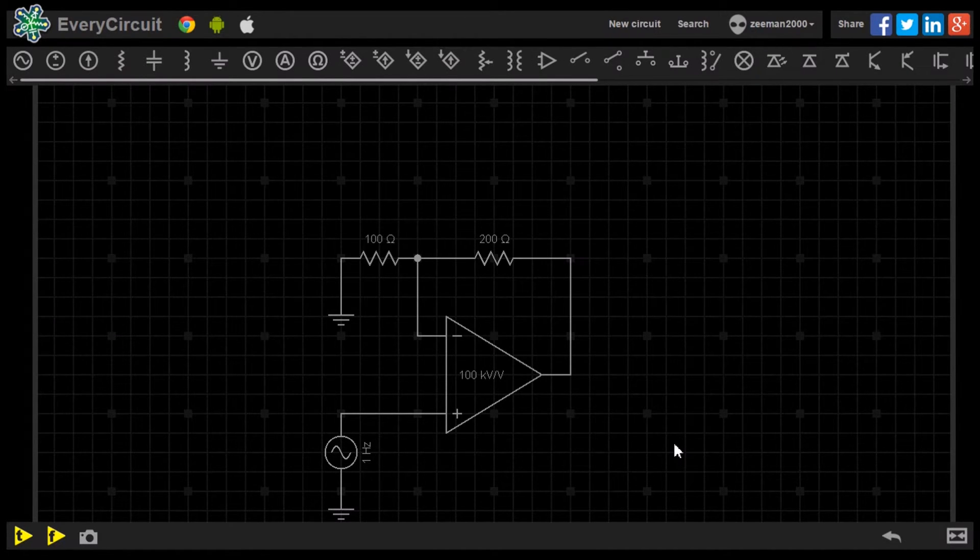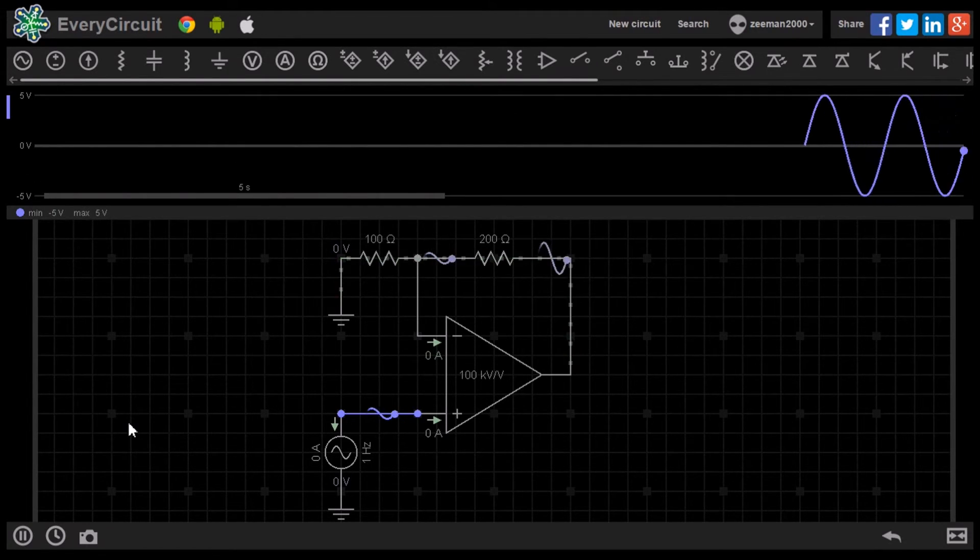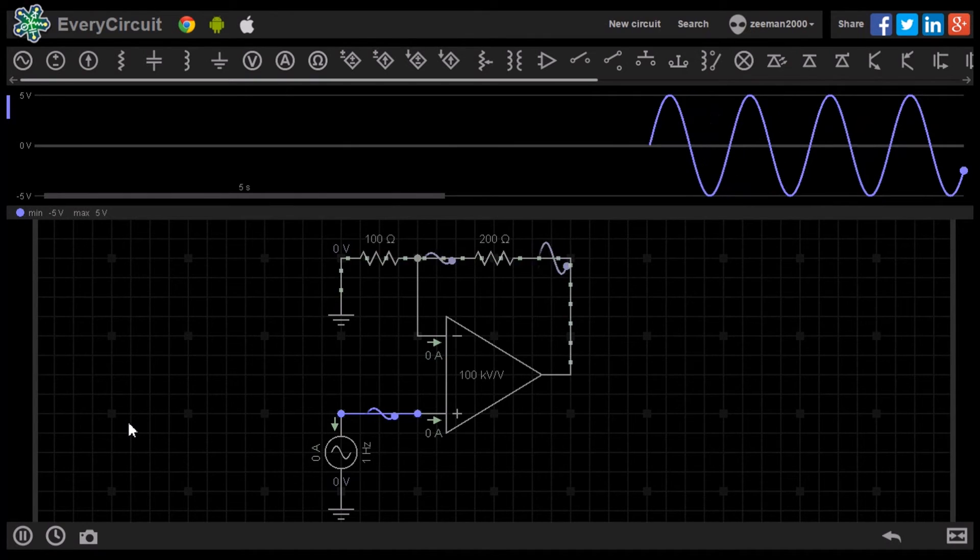Before we play the simulation, we will highlight the input signal so it can be seen in the waveform viewer. As we can see, it is producing a 10 volt peak-to-peak sine wave.